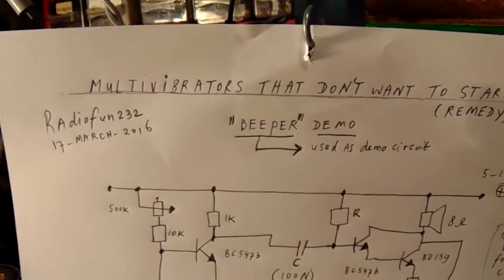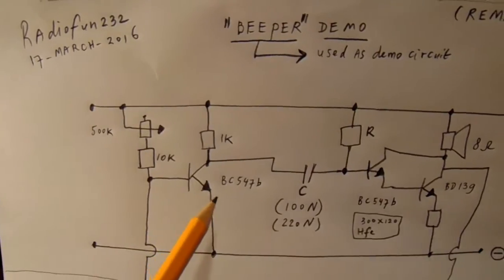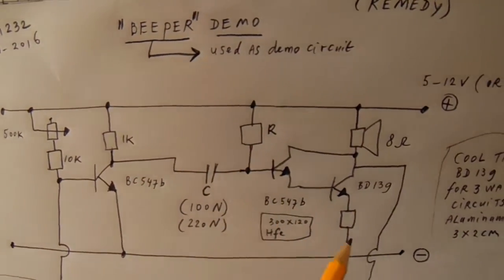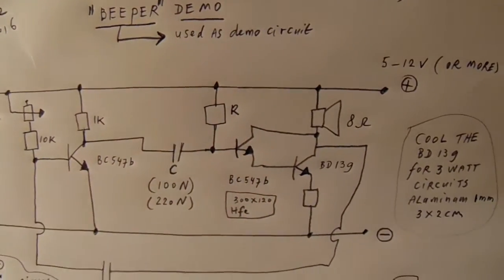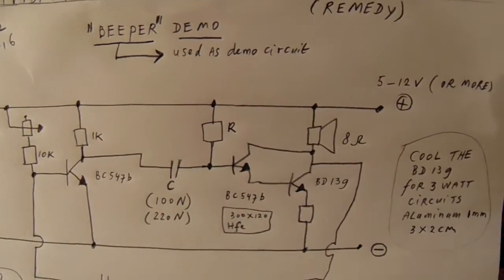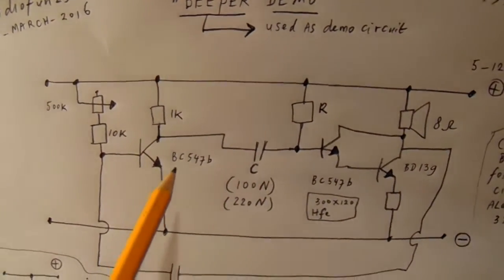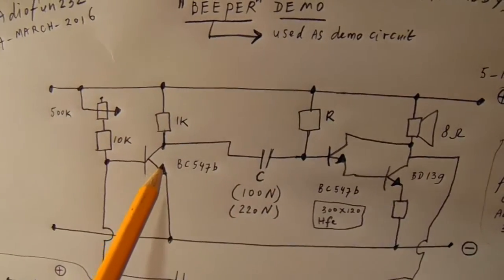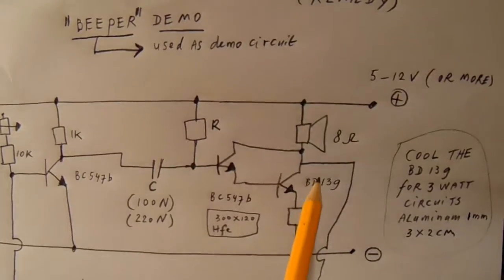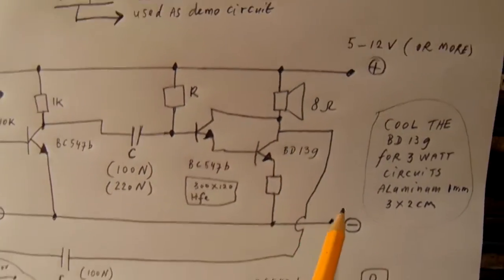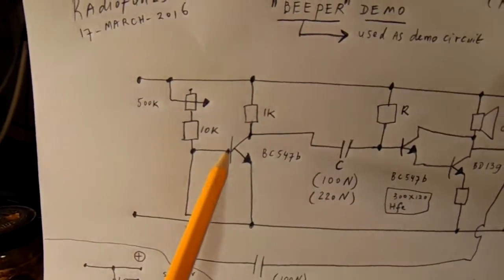They always consist of two transistors here and here. Here I've used a Darlington, but you can compare that to a transistor with an extremely high amplification factor. Two transistors, from the collector one cap to the base, and here from the collector one cap back to the base from the other transistor.